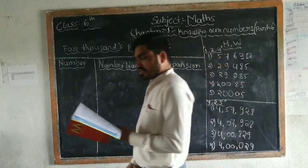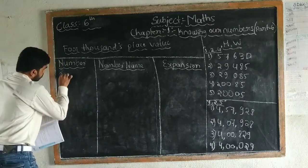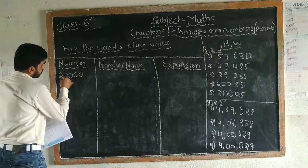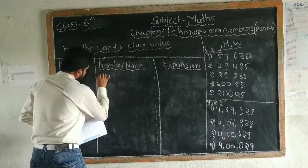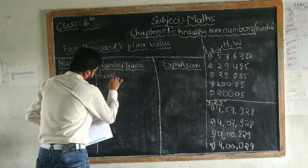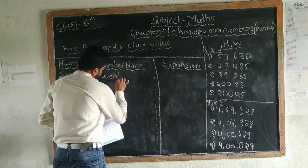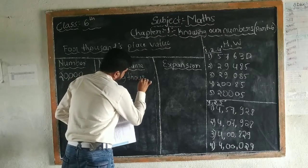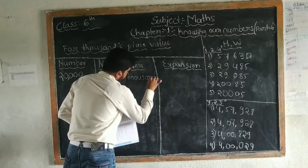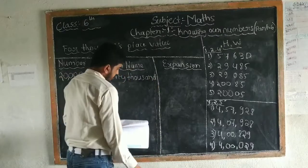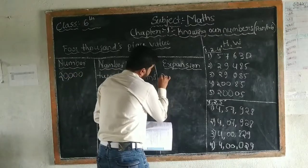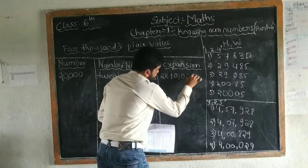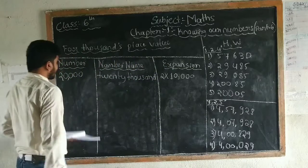The first number is 20,000. How can we write it? Twenty thousand. How can we expand this one? 2 into 10,000. Okay, same as it is.